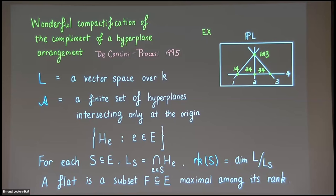A flat is a subset that is maximal among sets of its rank. In this example, the flats are exactly {1,4}, {2,4}, {3,4}, and {1,2,3}. The subset {1,2} is not a flat because it has the same intersection space as {1,2,3}, but {1,2} is strictly contained in {1,2,3}, so {1,2} is not a flat.